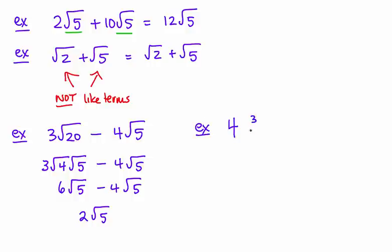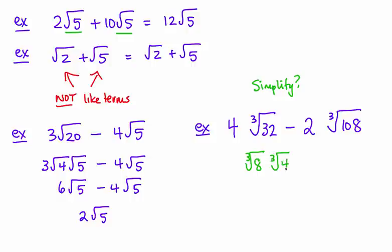If I have 4 cube root of 32 minus 2 cube root of 108, this is a fairly difficult example. Here again it looks like I've got cube roots that are different, not like radicals, but I do have to ask myself, can I simplify these? A perfect cube would be 8, and that would leave over another cube of 4. So this 32 can be 8 and 4, and I pick one that works out nicely. This part works out nicely to be 2, so this is really 4 times 2 times the cube root of 4, and then 4 times 2 is 8 cube root of 4.